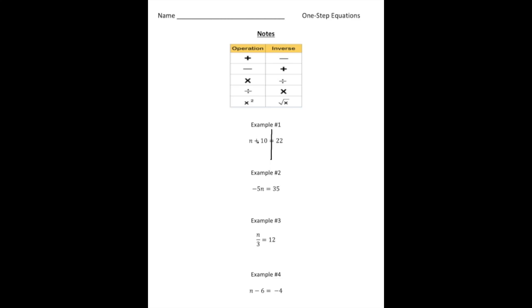We want to get n all by itself. So notice we're adding 10. So the opposite of adding 10 is going to be take away 10. So I'm going to take away 10 from both sides. And notice these cancel out. And when we do this, we're now going to have n equals, well, 22 take away 10 is 12. And there it is. And one beautiful thing about algebra is you can take this number, plug it in for n. 12 plus 10 is 22.